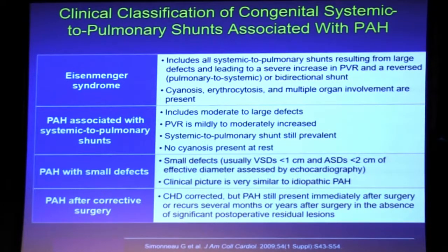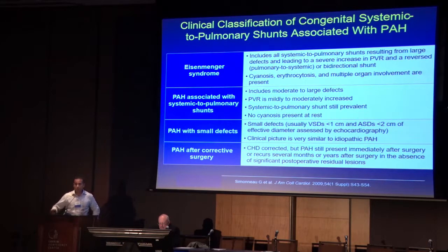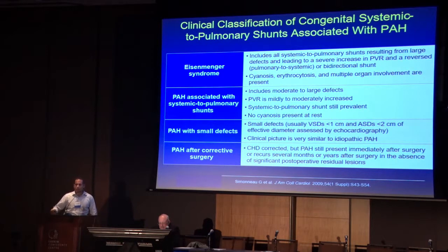There's an entity of PAH with small defects — you can have PAH that acts like an idiopathic variety but just happens to have an ASD. The ASD doesn't necessarily drive the clinical presentation. This group, whether ASD or VSD, acts very similar to idiopathic PAH, which has an extremely poor prognosis. Then there's PAH after corrective surgery: individuals who had early appropriate closures but still develop PAH in the future.